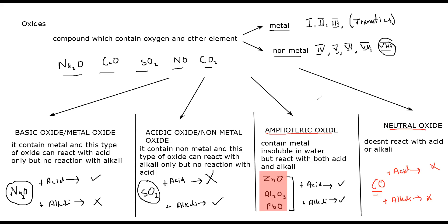The easy way to learn this table: just learn the examples of amphoteric oxides — keep in mind zinc, aluminium, and lead. Then if there is a metal inside, it will be a basic oxide. If there is a non-metal, it will be an acidic oxide.